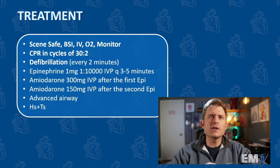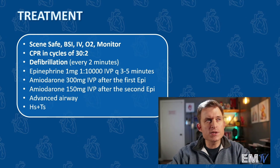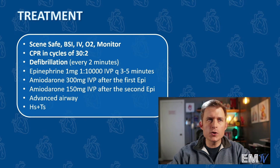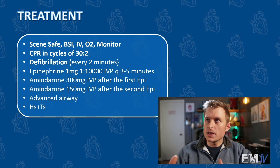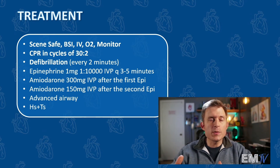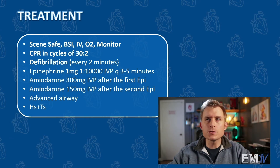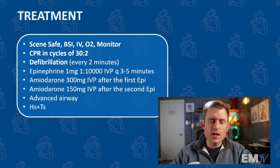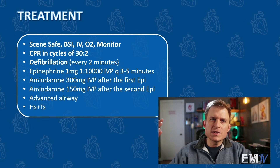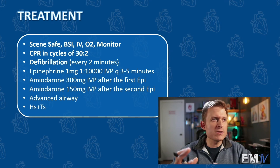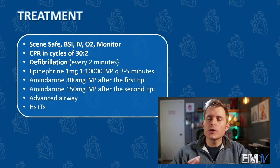I'm going to be giving epinephrine, one milligram of 1-to-10,000 IV push, every three to five minutes. I'm going to be giving my anti-dysrhythmic — my primary one is amiodarone, 300 milligrams IV push after the first dose of epi — and then a second amiodarone at 150 milligrams given after the second epinephrine. I'm going to consider an advanced airway and then I'm going to consider my H's and T's.